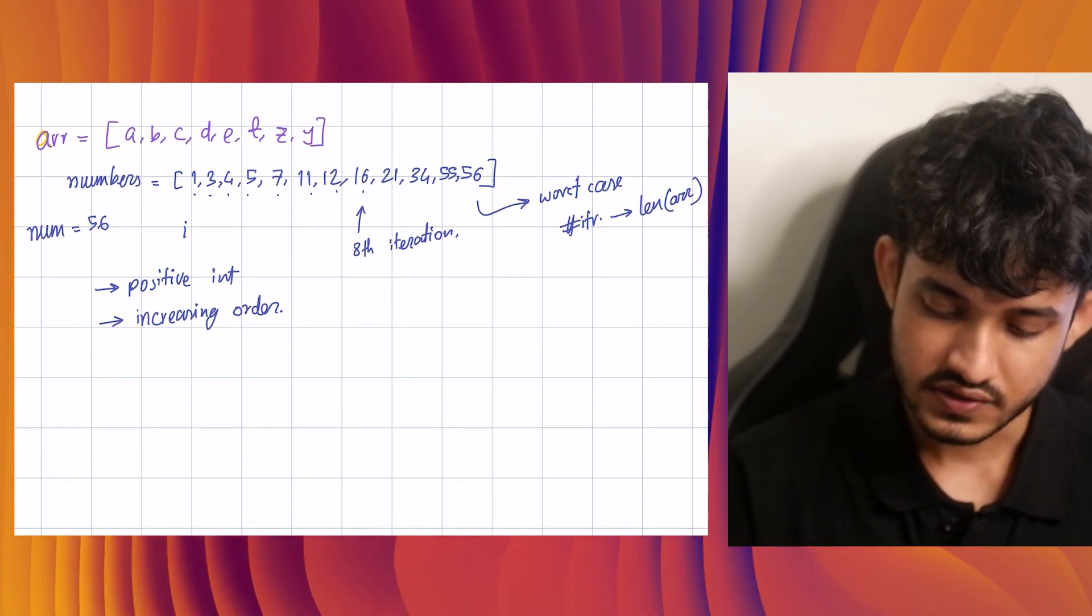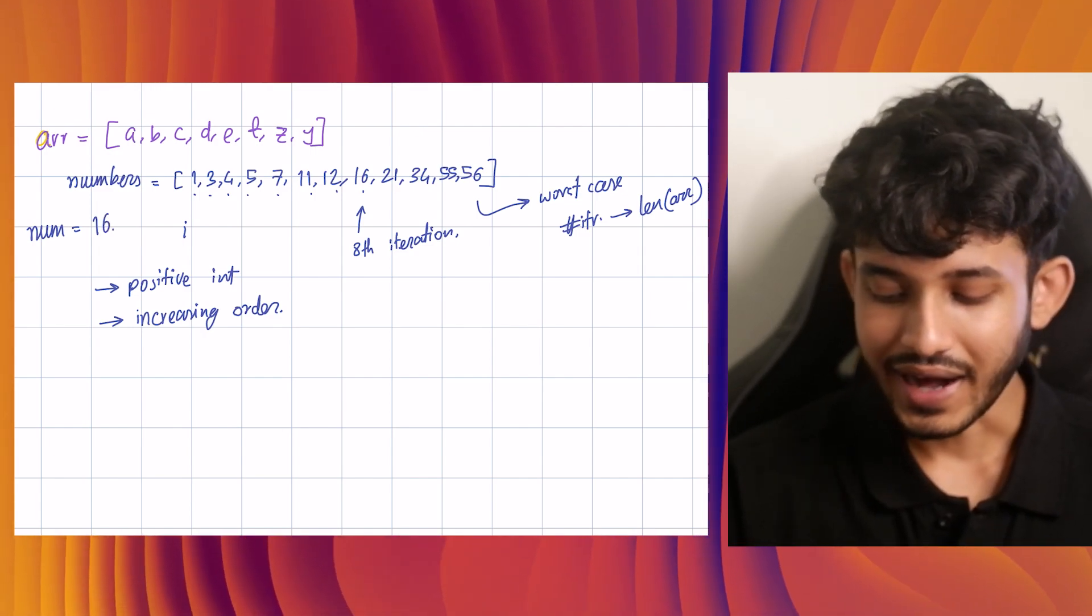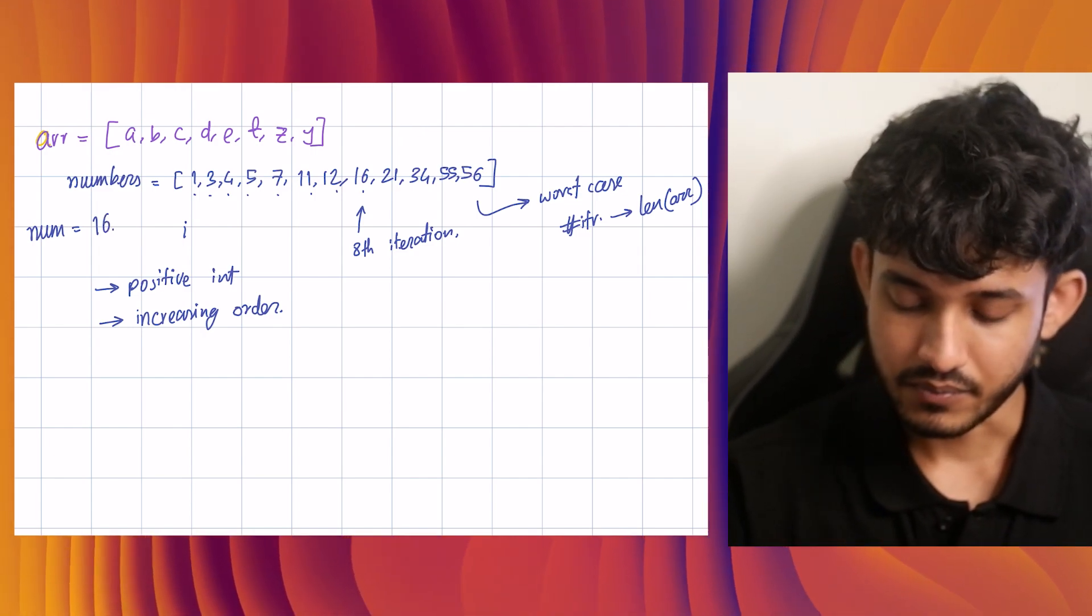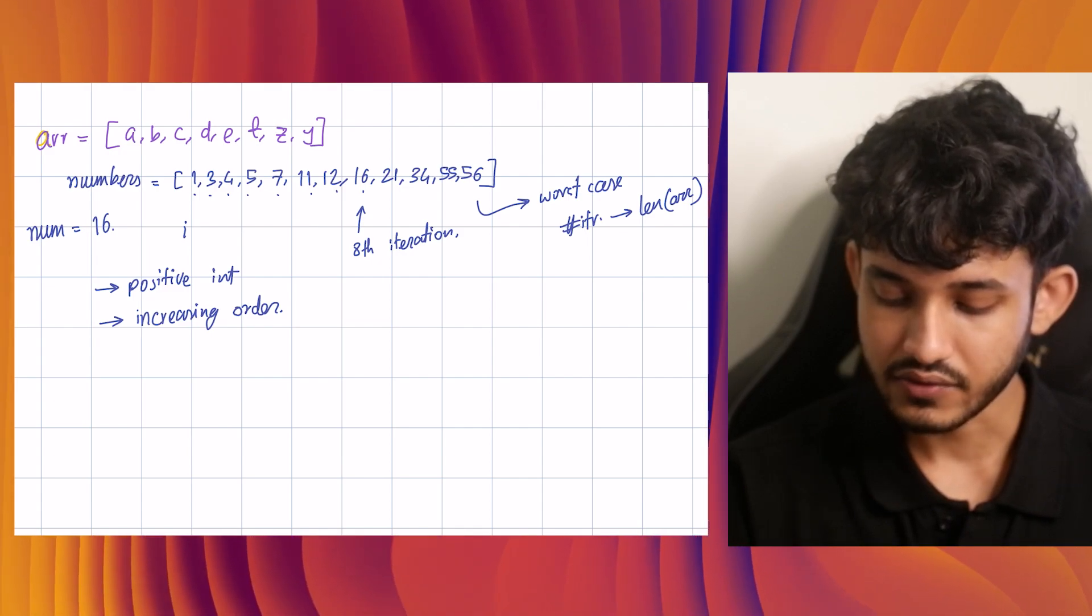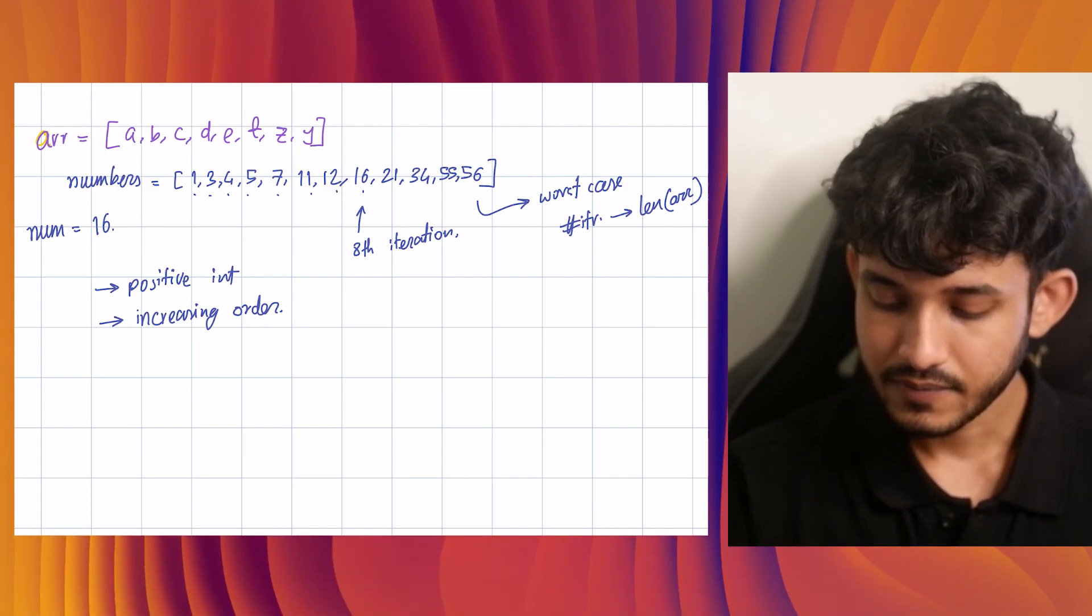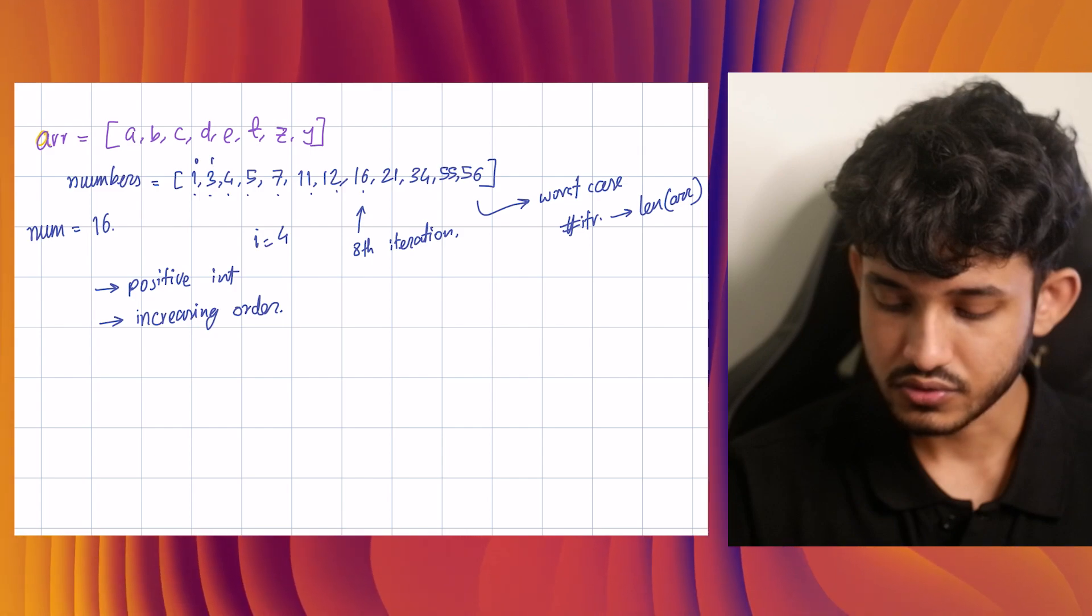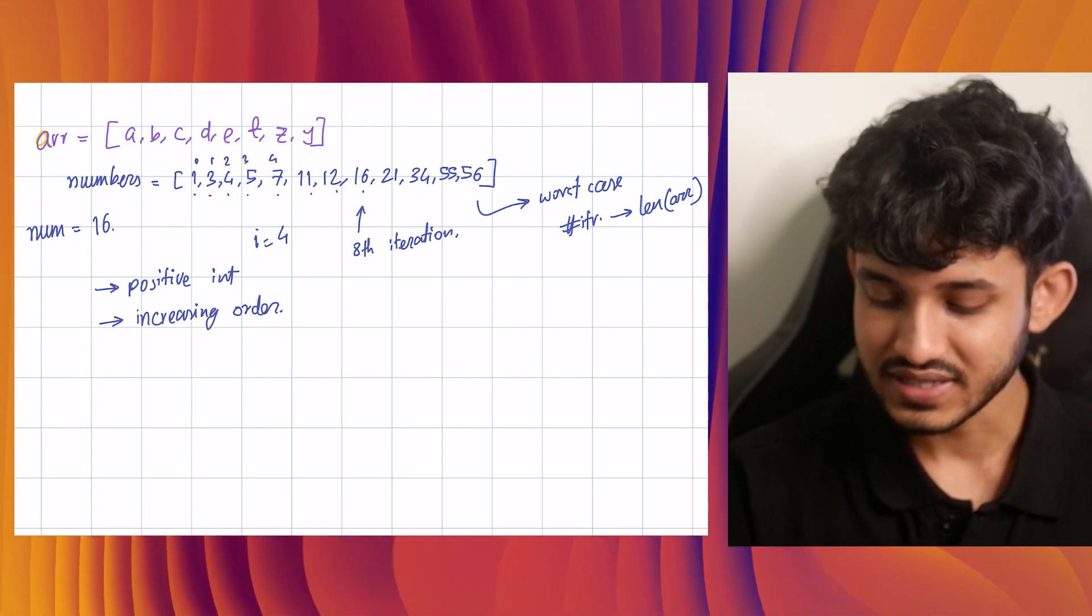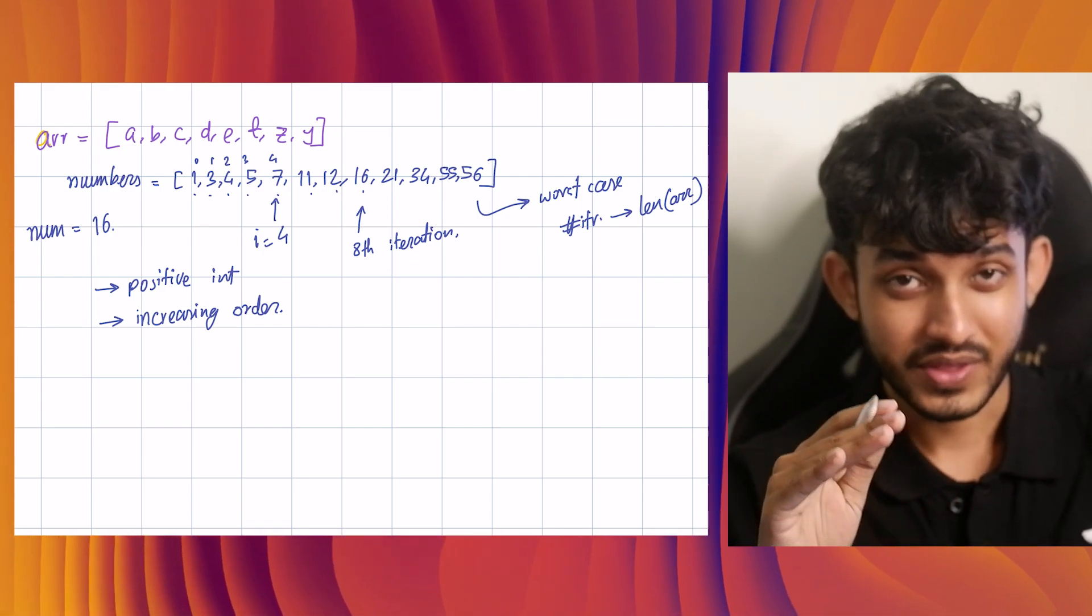Suppose again, we are searching for 16. Now, if we randomly, suppose for example, if we randomly instantiate i instead of i equals to zero, we instantiate it to maybe i equals to four. So what is the fourth element? This is zero, one, two, three, four. We get as seven. Now see, we instantiated it at four. Initially, it would have taken like four, five, five iterations to get to there.